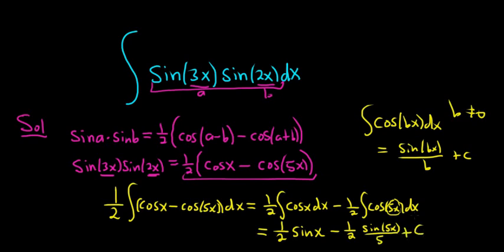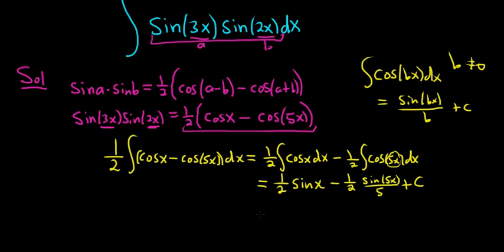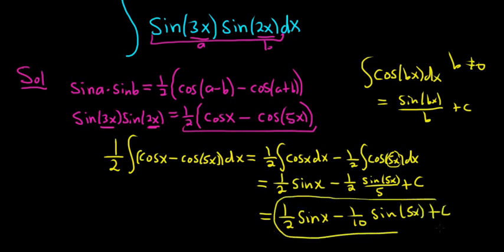The last thing maybe is to multiply the 5 and the 2. This is equal to 1 half sine x minus 1 tenth sine of 5x plus c. And that's the final answer.